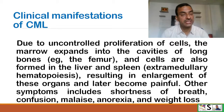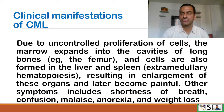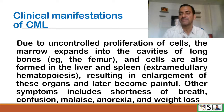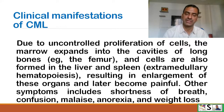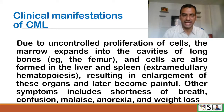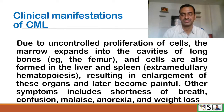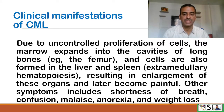Clinical manifestations of CML: due to uncontrolled proliferation of cells, the marrow expands into the cavities of long bones such as the femur, and cells are also formed in the liver and spleen — known as extramedullary hematopoiesis — resulting in enlargement of these organs, which later become painful. Other symptoms include shortness of breath, confusion, malaise, anorexia, and weight loss.